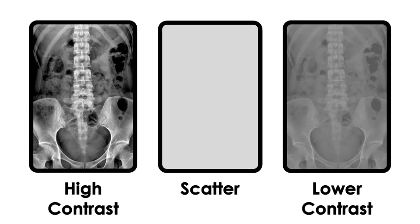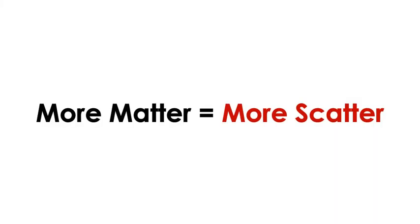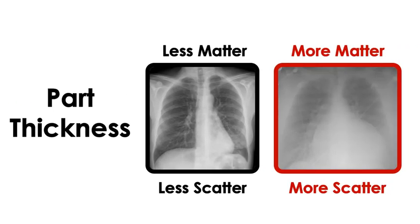So when does Compton scattering occur? Remember this principle. More matter equals more scatter. For example, part thickness. With more matter in the way, more photons interact by Compton scattering.